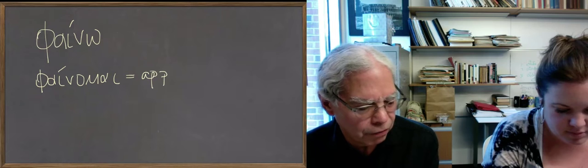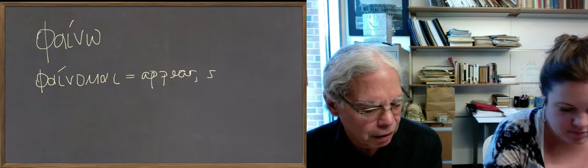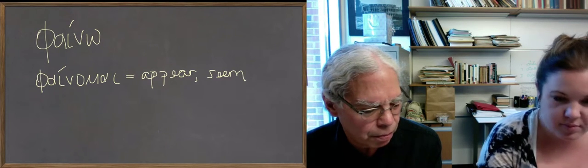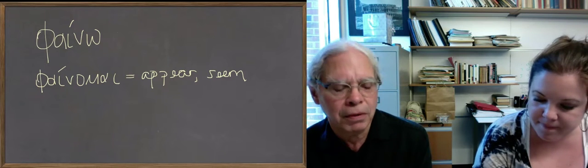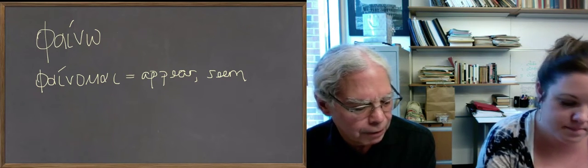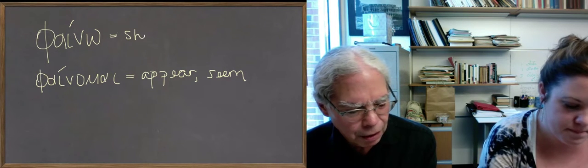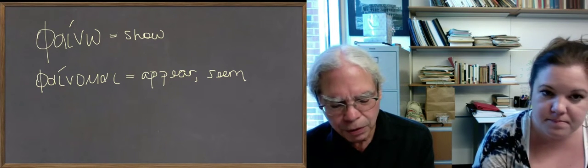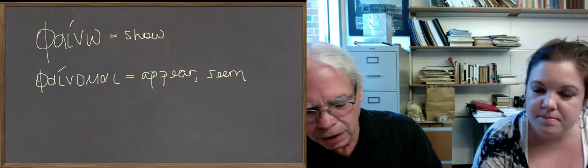So the principal parts are phino, phano, contract future, ephena, pephena, pephasmai, and ephanane. Aorist passive is common. There's also an aorist passive attested epanthane. It's an old form. So the beautiful thing about it is, pointed out in the book, that with this verb you can have either an infinitive construction or a supplementary participle.